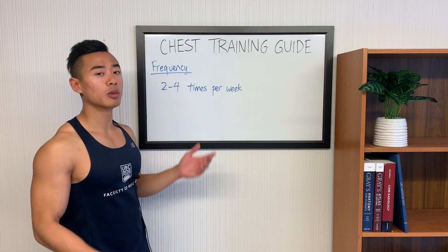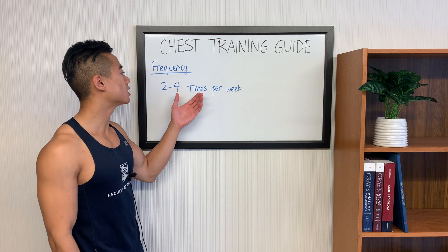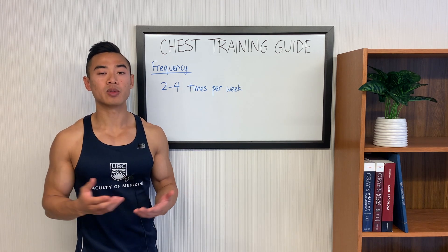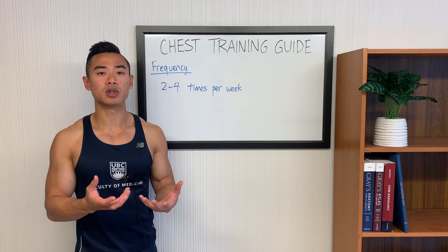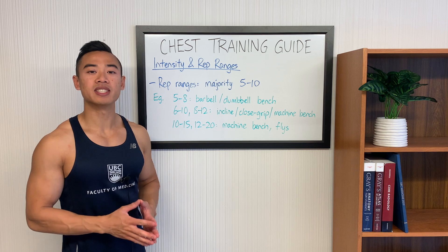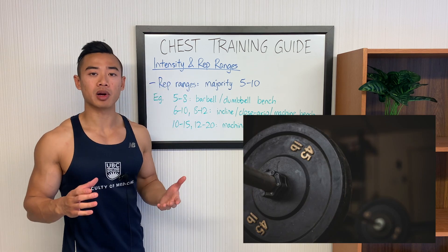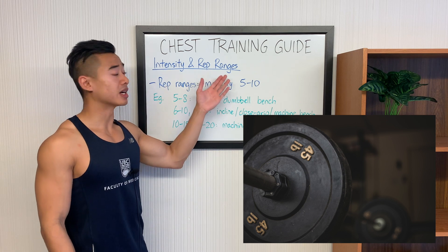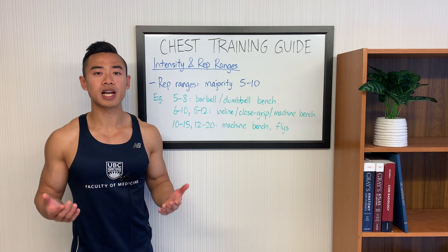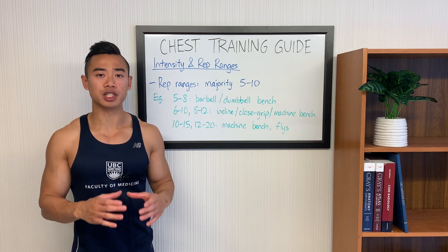Next up in terms of frequency, for most people I recommend training your chest somewhere between two to four times per week. This will depend somewhat on your training volume — if you're training with very high volumes, you might need more days in the week to accommodate that. Lastly, let's talk about intensity and rep ranges. Intensity is basically the load on the bar, and this is closely related to rep ranges. Lower rep ranges will correspond to heavier weights. Since the chest is fast twitch dominant, I recommend focusing more on lower rep ranges.